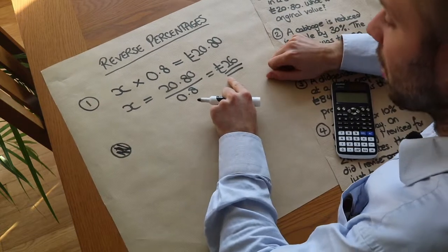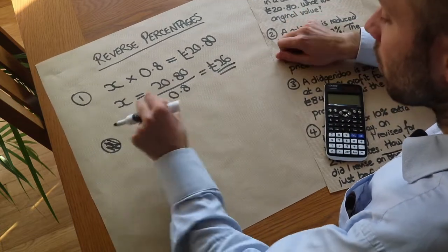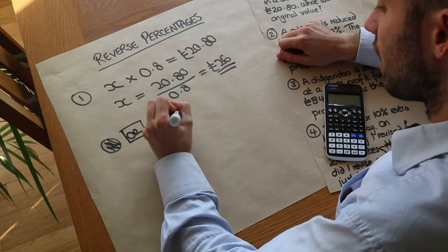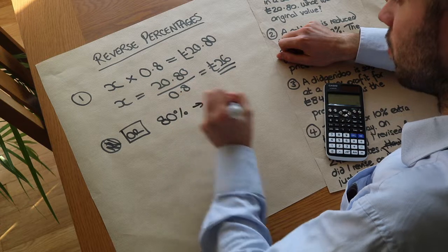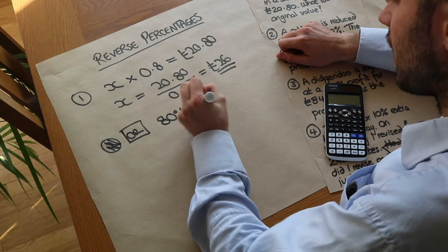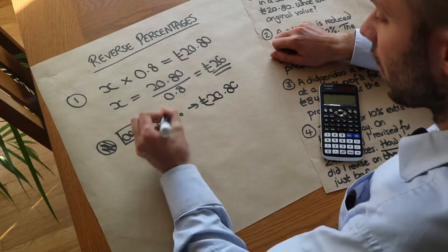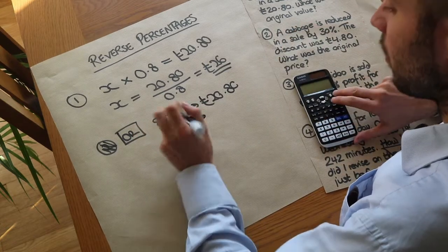Now the other way you could do this by the way is to say well if it was reduced to 80% we know that 80% of the value is equal to £20.80. And then you sort of work your way back up to 100%. We could go via 10%. So we could find out what 10% was.